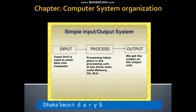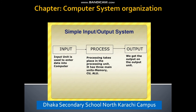The process of the data processing cycle is very simple. The input unit is used to enter data into the computer. Processing takes place in the processing unit, which has three main components: memory, CU, and ALU. We get the output on the output unit.